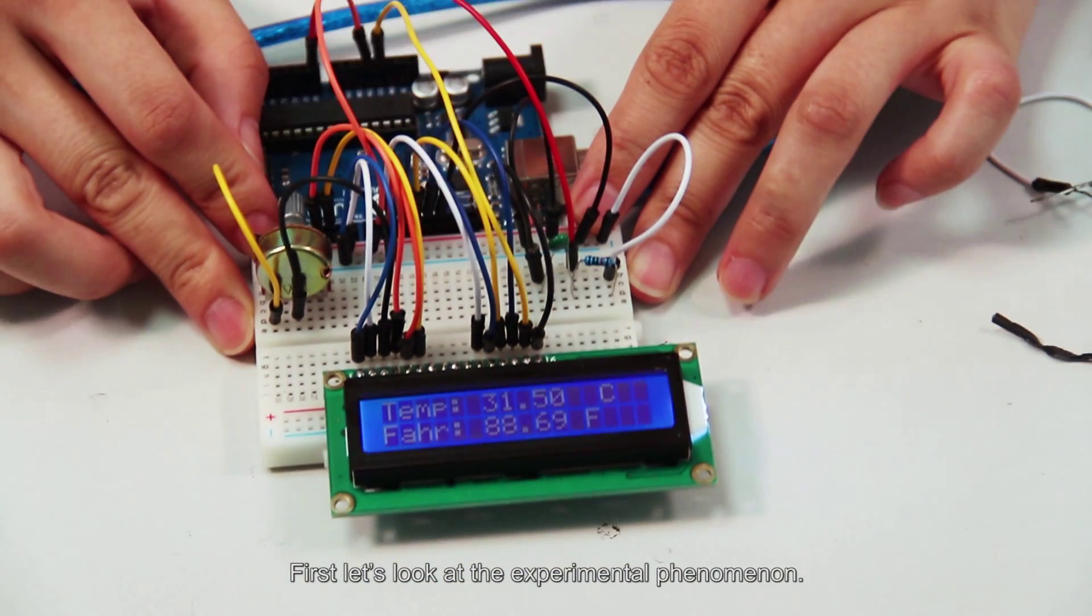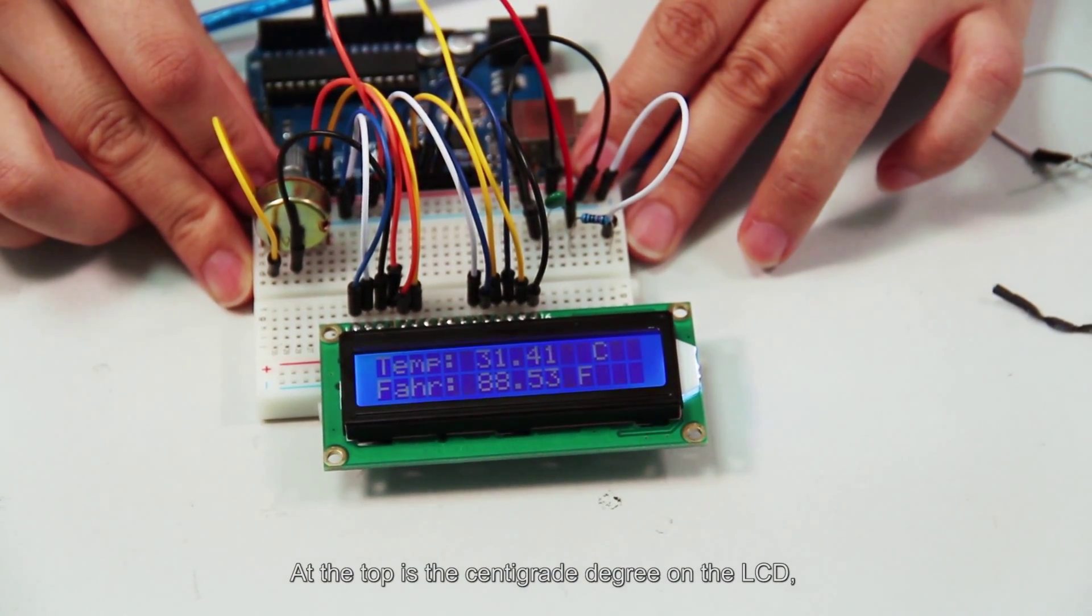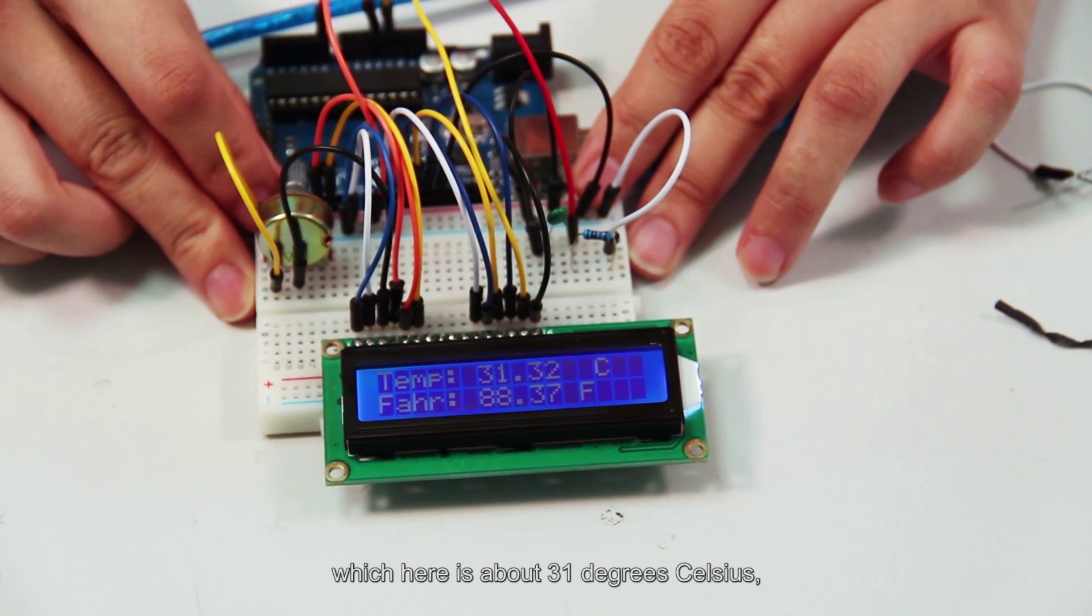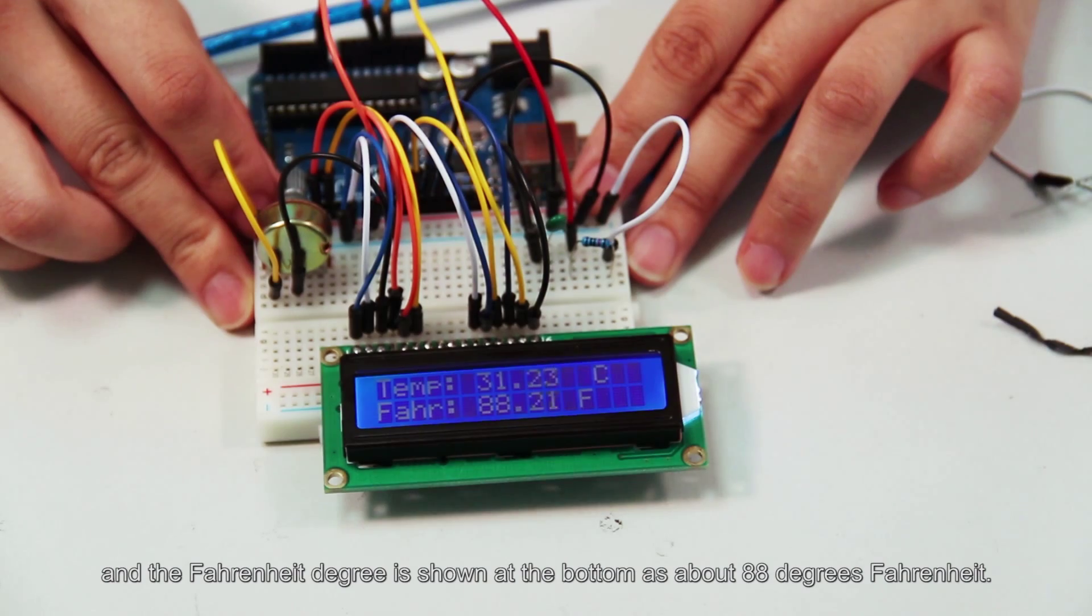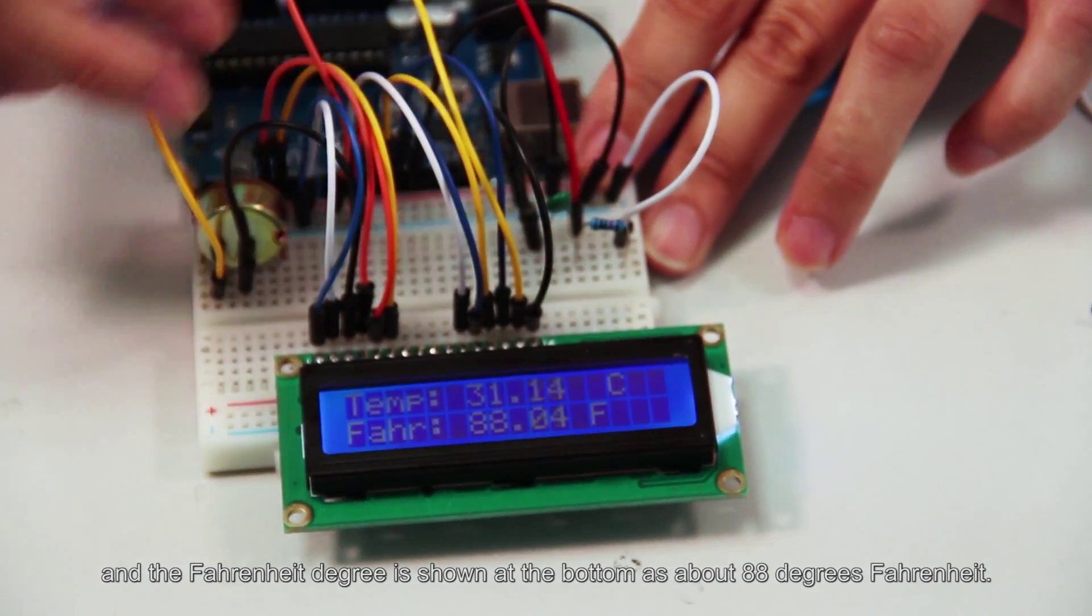First, let's look at the experimental phenomenon. At the top is the centigrade degree on the LCD, which here is about 31 degrees Celsius. And the Fahrenheit degree is shown at the bottom as about 88 degrees Fahrenheit.